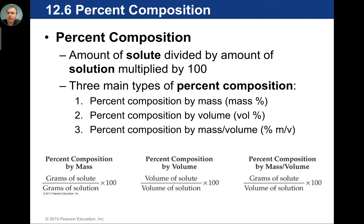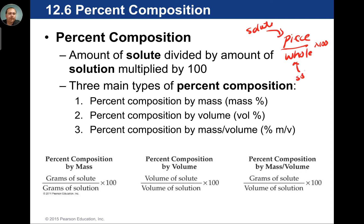Percent composition is the easiest part of this chapter, especially for the matching section. All we're really doing is taking the piece divided by the whole — an idea we've seen for several chapters, including the law of definite composition. We just have to realize that the piece is the solute in most cases, and the whole is the solution.